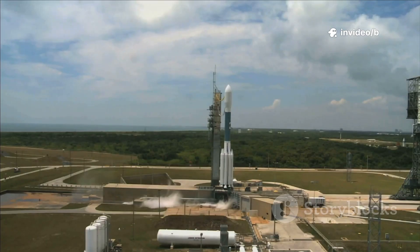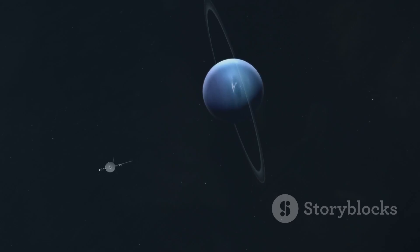Voyager 2's journey was a miracle of timing and ingenuity, launched to take advantage of a rare planetary alignment. Using gravity assists, it played a cosmic game of billiards, visiting Jupiter, Saturn, Uranus and Neptune.